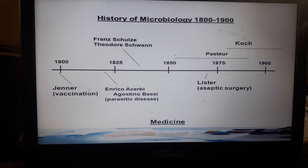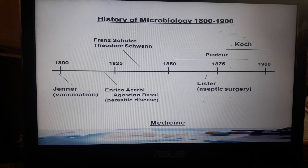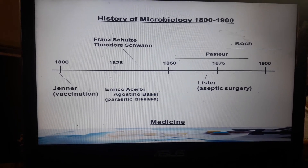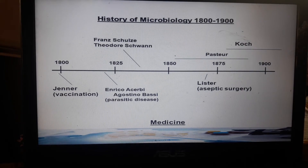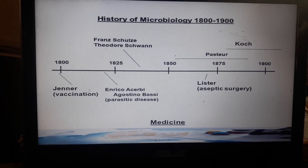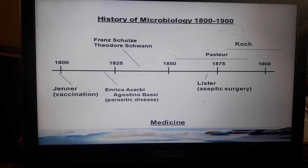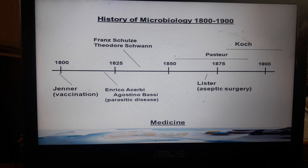Next, the history of microbiology. In the 1800s, we have Jenner, who is considered to be the one that discovered the vaccination process. Jenner also discovered different vaccines, especially the smallpox and cowpox vaccines. In 1825, Enrico Acerbi or Agustino Bazzi studied different diseases caused by parasites, or parasitic diseases. We also have Joseph Lister and the aseptic surgery or aseptic technique, wherein a process of surgery uses aseptic technique — meaning free of microorganisms.